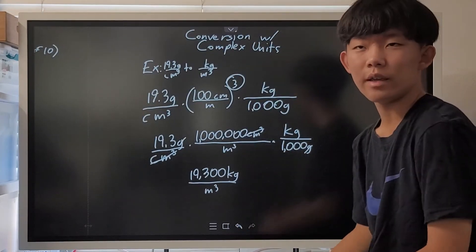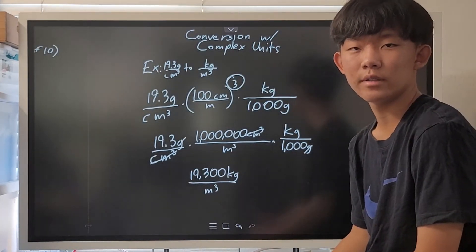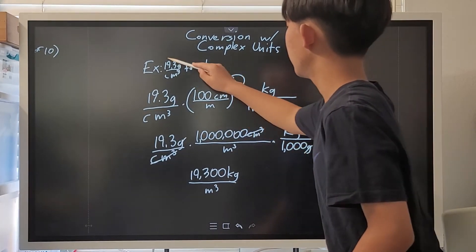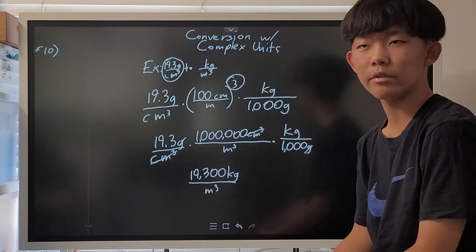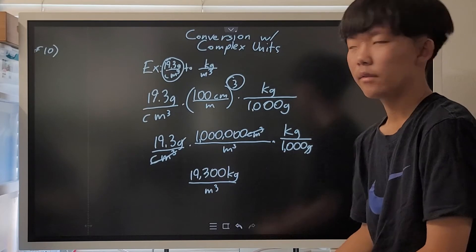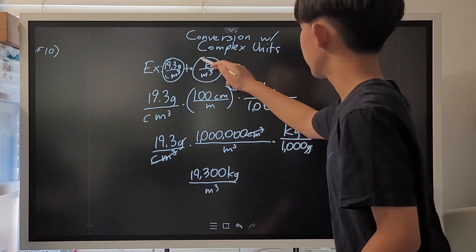And now, we encounter one of those annoying units which have an exponent. For example, this guy. This is 19.3 grams per centimeter cubed, as it's read. We want to convert this to kilograms per meter cubed.